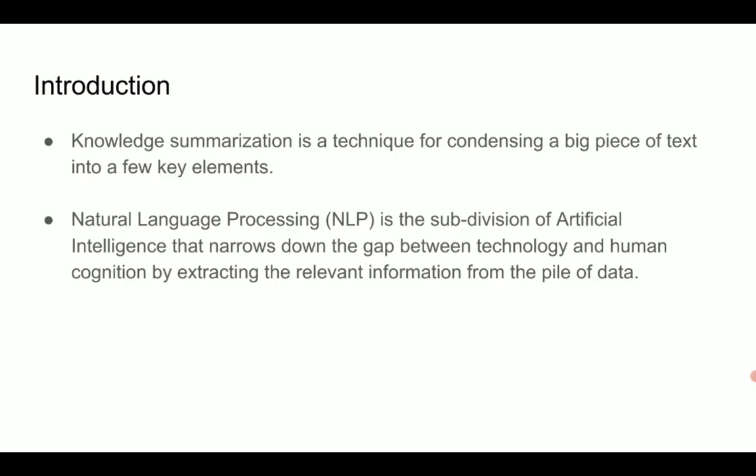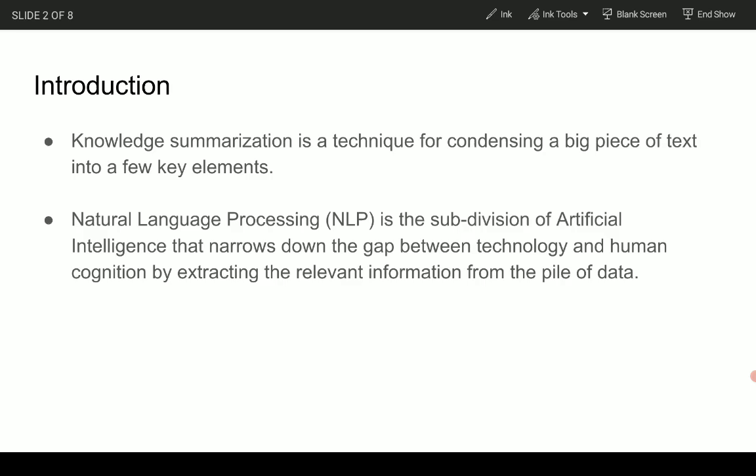Knowledge summarization is a technique for condensing a big piece of text into a few key elements that give a general impression of the content. When someone requires a quick and precise summary of a large amount of information, it becomes hectic and vital. If it's done manually, summarizing text can be costly and time consuming.